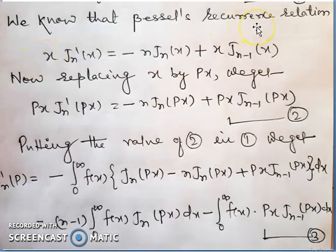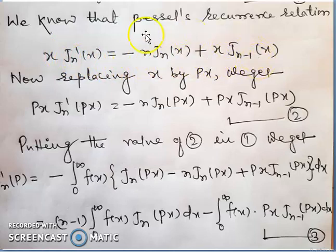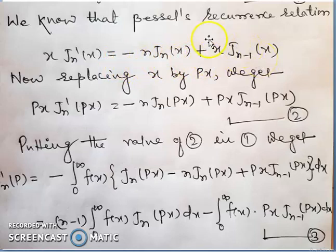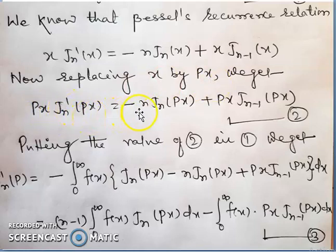Now we use the Bessel recurrence relation: x * jn'(x) = -n*jn(x) + x*j_{n-1}(x). Replacing x by px, we get: px * jn'(px) = -n*jn(px) + px*j_{n-1}(px). This is equation 2.